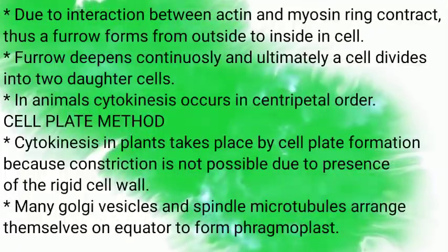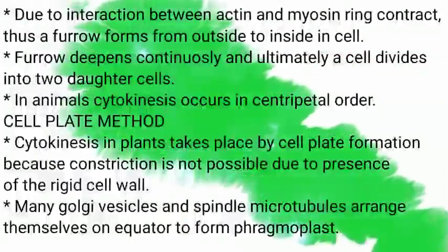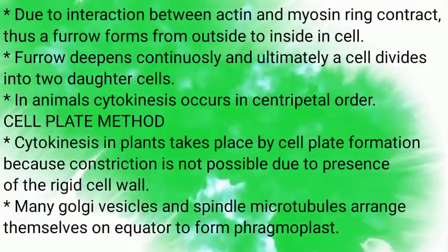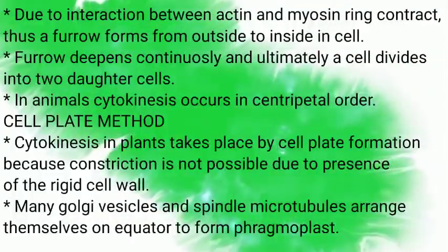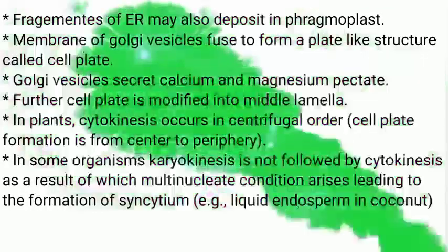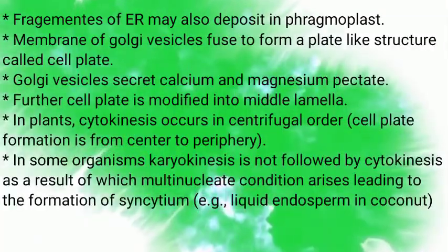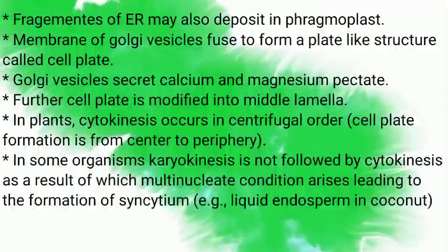Cytokinesis in plants takes place by cell plate formation, because constriction is not possible due to the presence of a rigid cell wall. Many Golgi vesicles and spindle microtubules arrange themselves on the equator to form a phragmoplast. Fragments of endoplasmic reticulum may also deposit in the phragmoplast. Membranes of Golgi vesicles fuse to form a plate-like structure called the cell plate. Golgi vesicles secrete calcium pectate and magnesium pectate. The cell plate is further modified into the middle lamella. In plants, cytokinesis occurs in a centrifugal order.